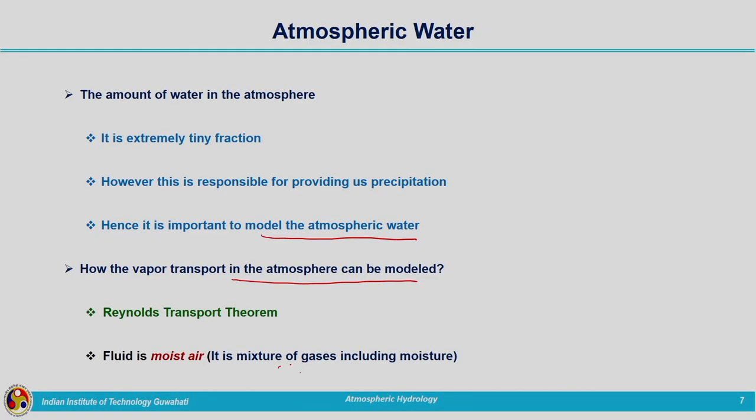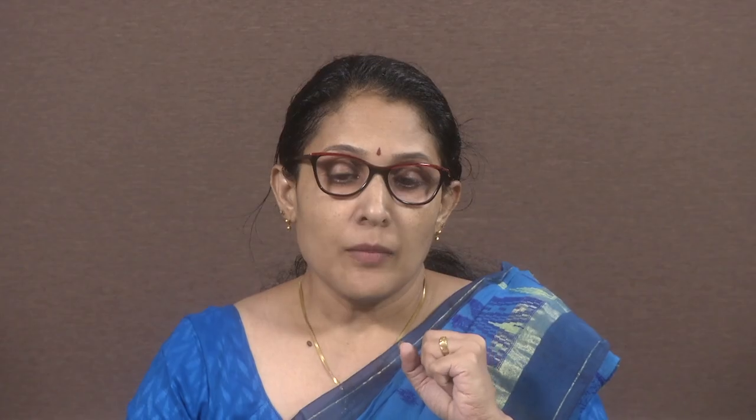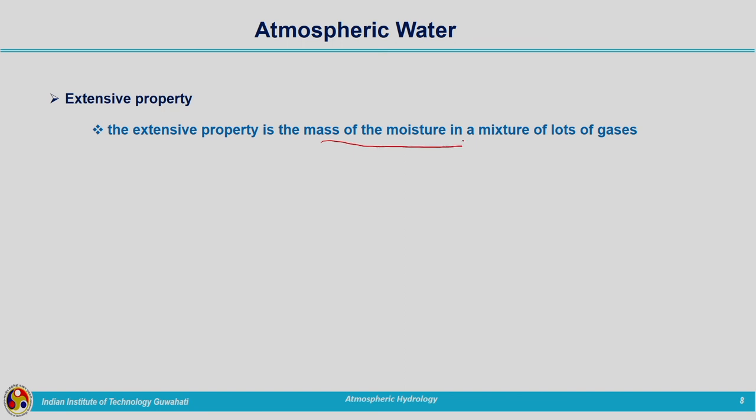Moist air is a mixture of gases including moisture. Water is present in the atmosphere in the form of liquid droplets, vapour, and also small amounts of ice, but mainly in the form of water vapour. So the fluid considered for modelling atmospheric water is the moist air. Using Reynolds Transport Theorem, we need to define the extensive property B and the intensive property. The extensive property B is the mass of the moisture or water vapour present in the mixture of gases.